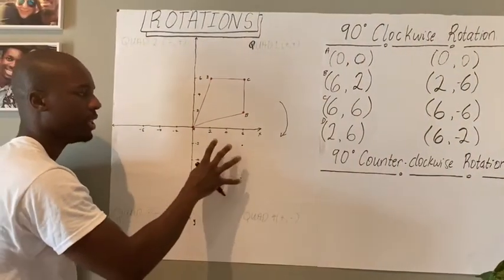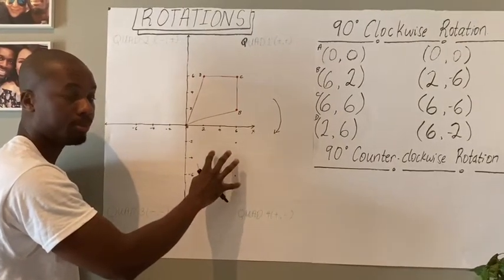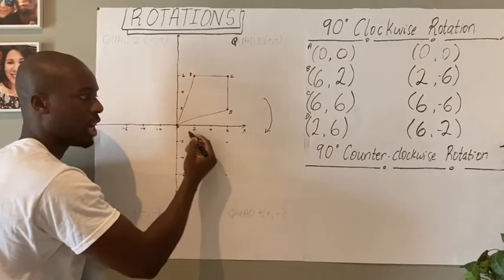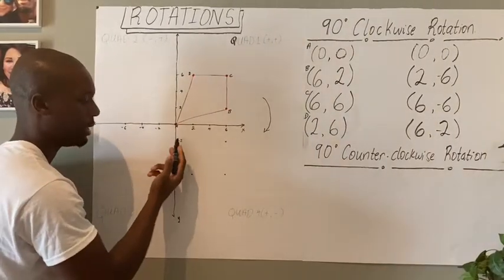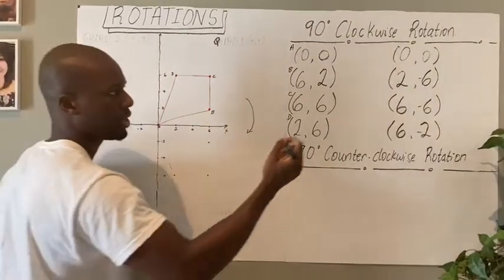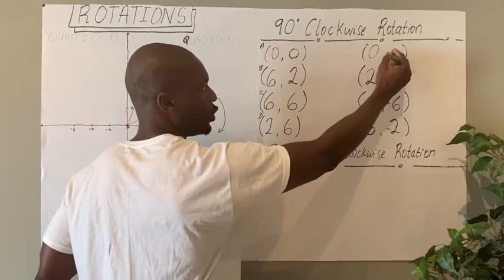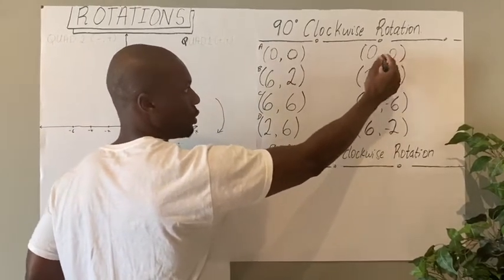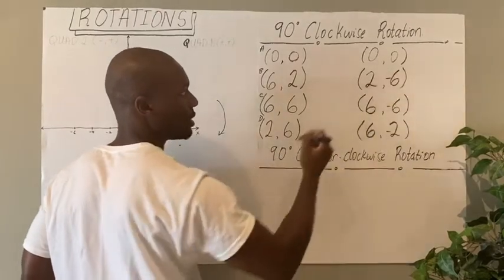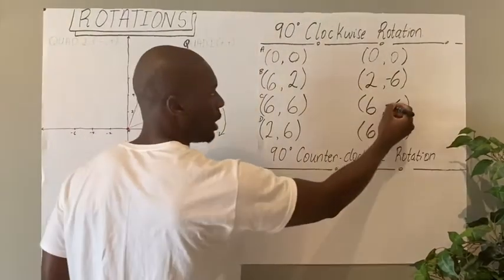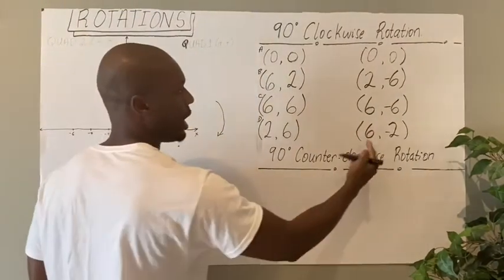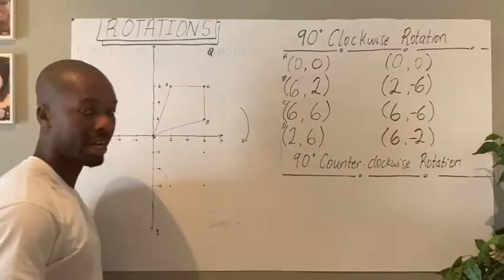And now that we know that this falls into the fourth quadrant, it means that the X values of my coordinates are going to be positive and the Y values of my coordinates are going to be negative. So this simply means that these are going to change to negative. So 0, 0 still stays 0, 0. 2 and 6 changes to 2 and negative 6. We have 6 and negative 6 here. And then this ends up as 6 and negative 2.